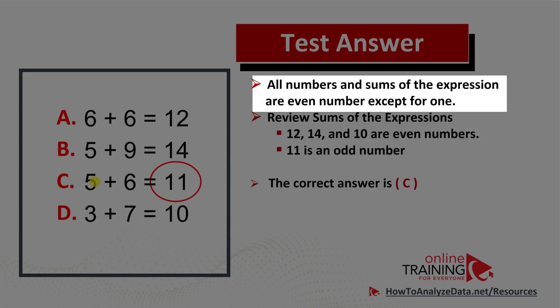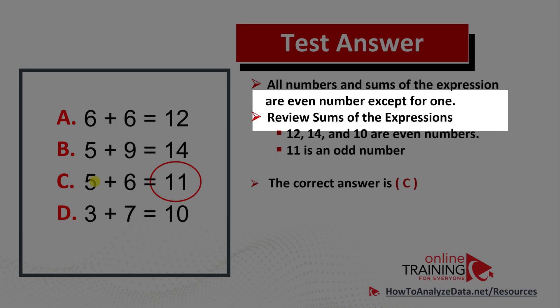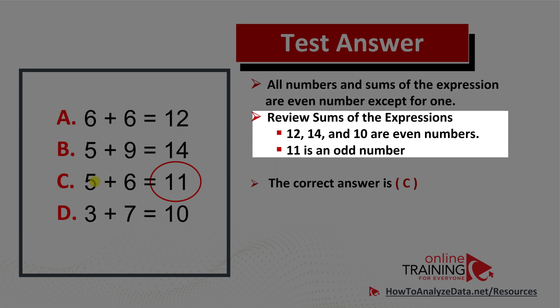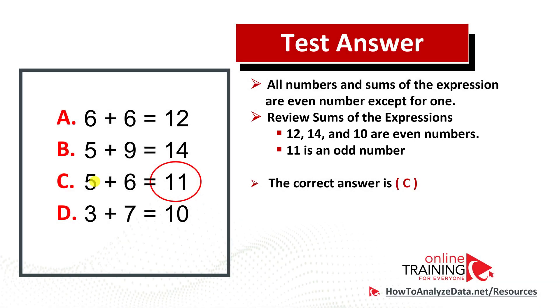Let's recap. All numbers in the sums of the expressions are even numbers except one. Reviewing the sums: 12, 14, and 10 are all even numbers, and 11 stands out as an odd number. So the correct answer here is choice C. Hopefully you've nailed this question.